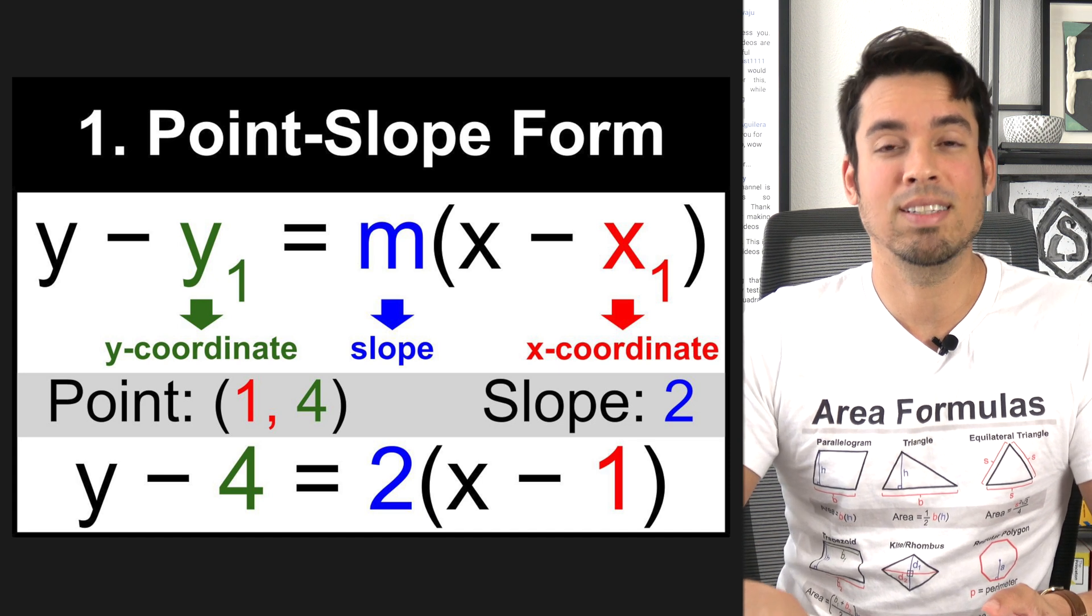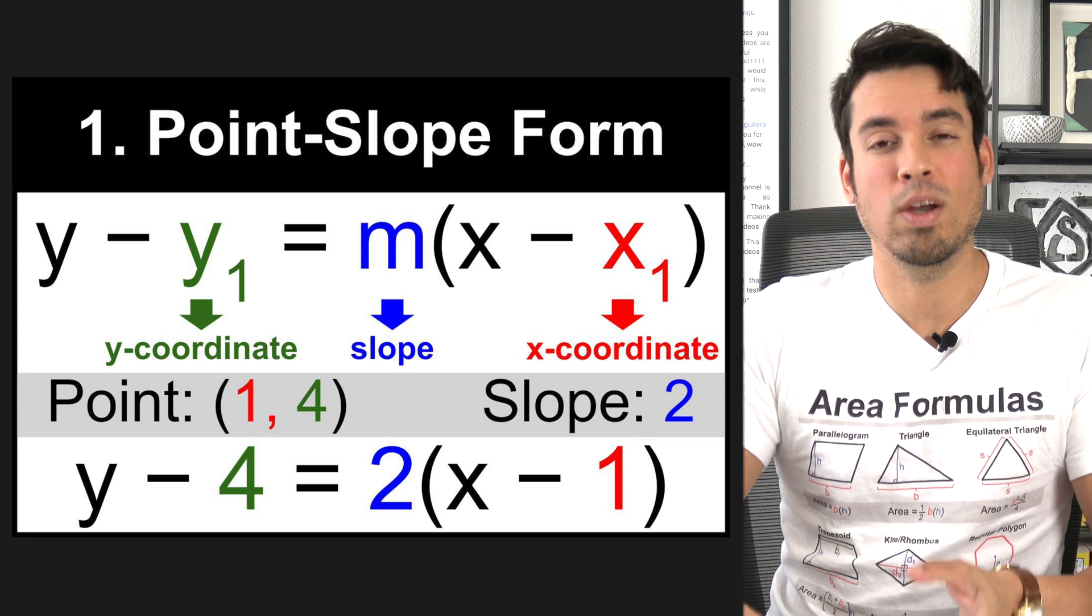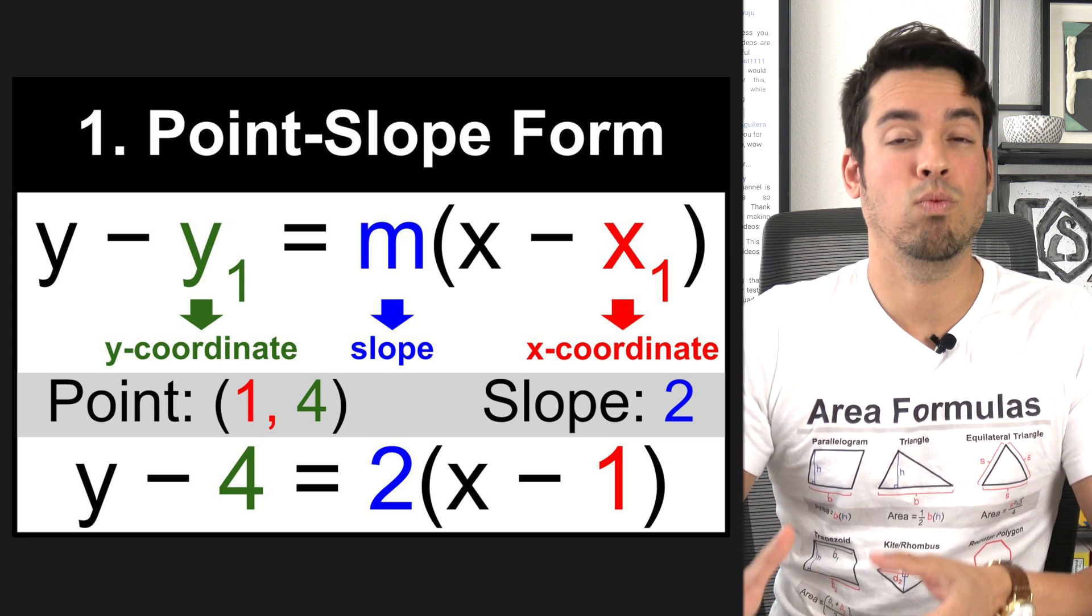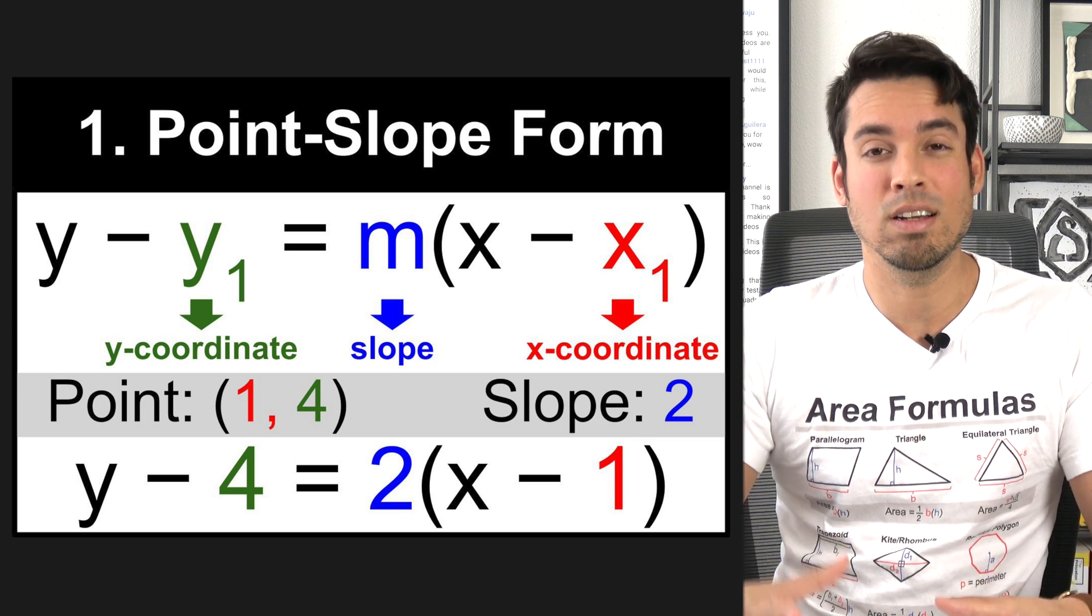The other great thing about knowing this formula is that in certain occasions and certain questions, they actually present the equation for the line in this format. In this example here, where we have a coordinate of one, four, and a slope of two, you can see how we slide those values in appropriately.